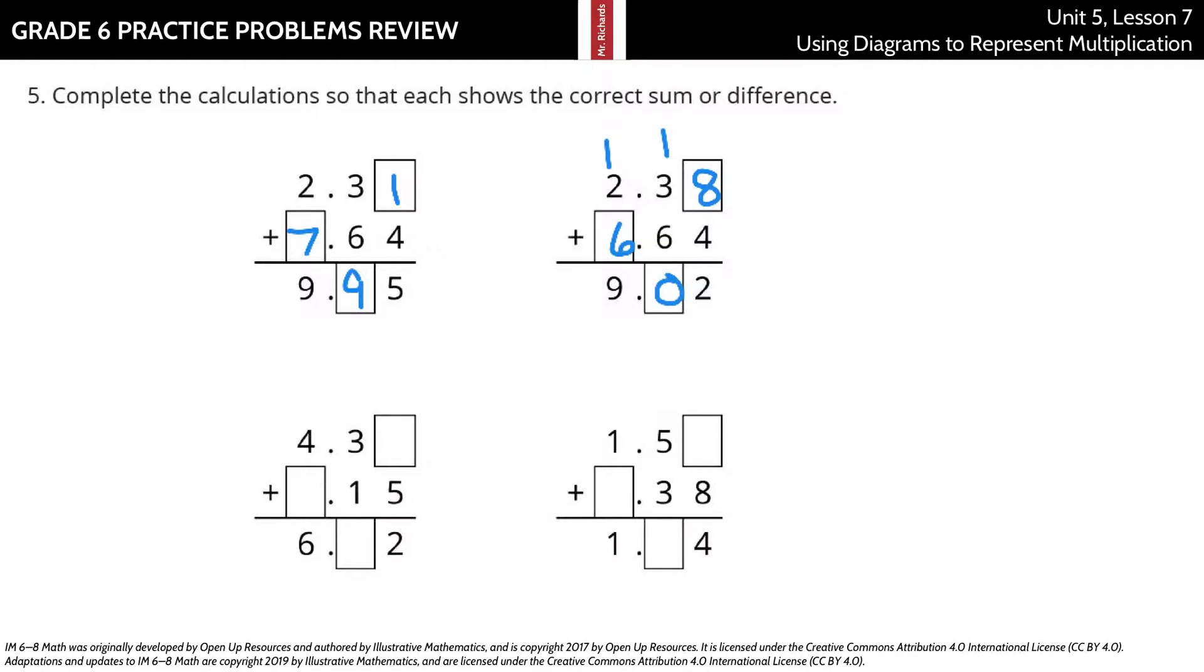Well, something similar is going on down here. What do I need to add to 5 to get to 2? Or in this case 12? It's going to be 7. Carry the 1. 1 plus 3 is 4 plus 1 is 5. And then 4 plus what is 6? It's going to be 2. What do I add to 8 to get to 4? Well, in this case 14, so 6. Carry the 1. 1 plus 5 is 6 plus 3 is 9. And 1 plus what is 1? Well, 0.